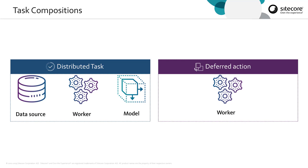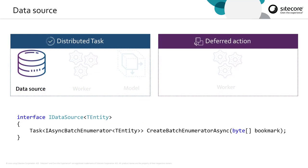Tasks themselves are composed of a number of different elements, and these elements allow us to extend the processing engine. The data source, for example — we can implement a new data source by simply implementing the iDataSource interface. You'll notice that the interface is a generic interface. The type parameter there is the type of the entity which we're returning from the data source. We only have a single method on this interface, createBatchEnumeratorAsync, and this is used to return the elements of the data source that are then passed on to the workers.